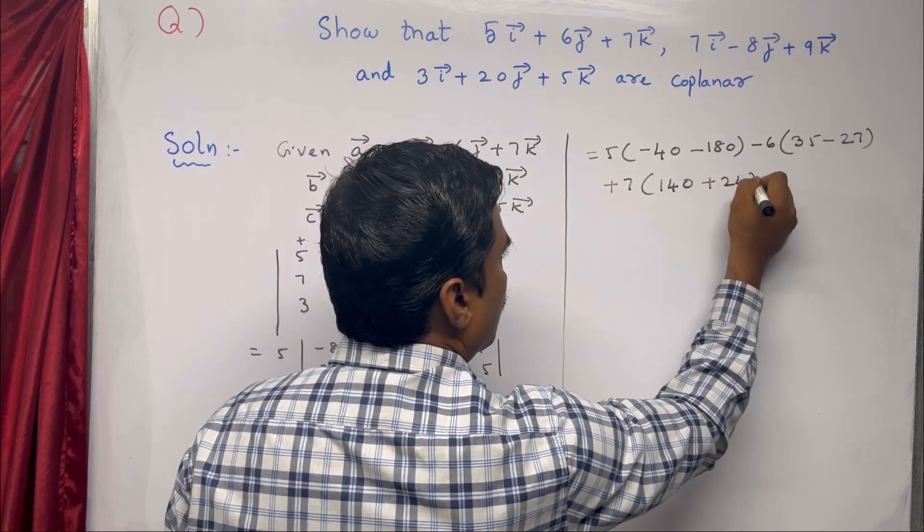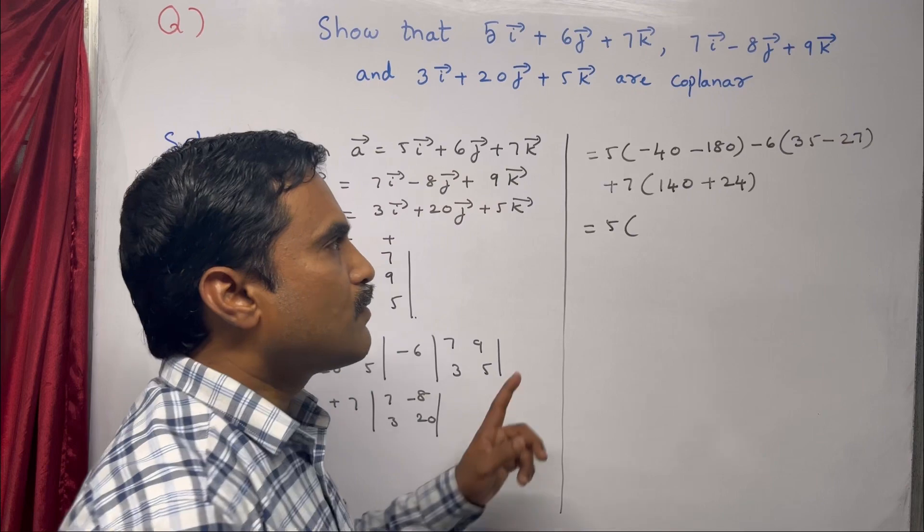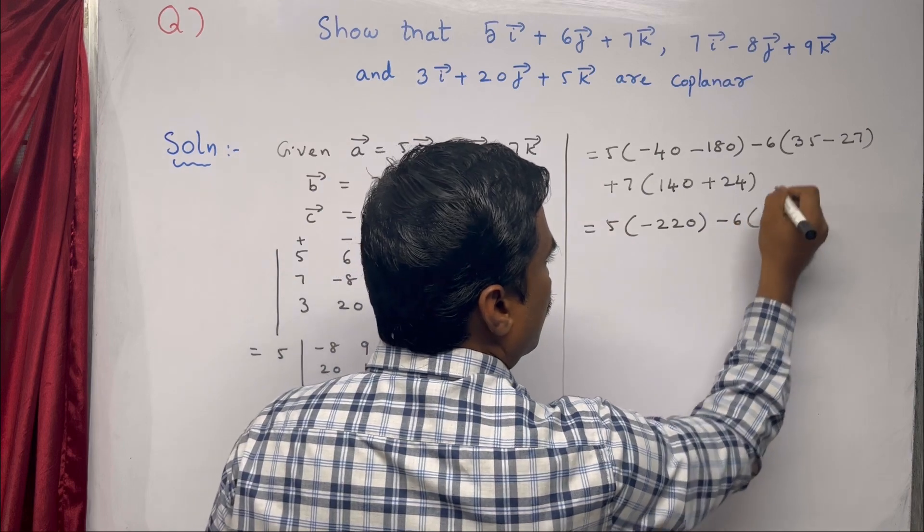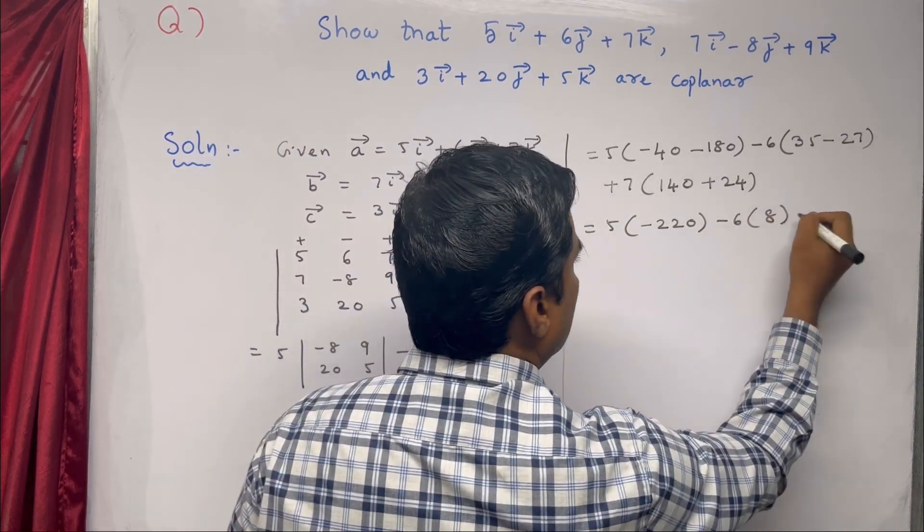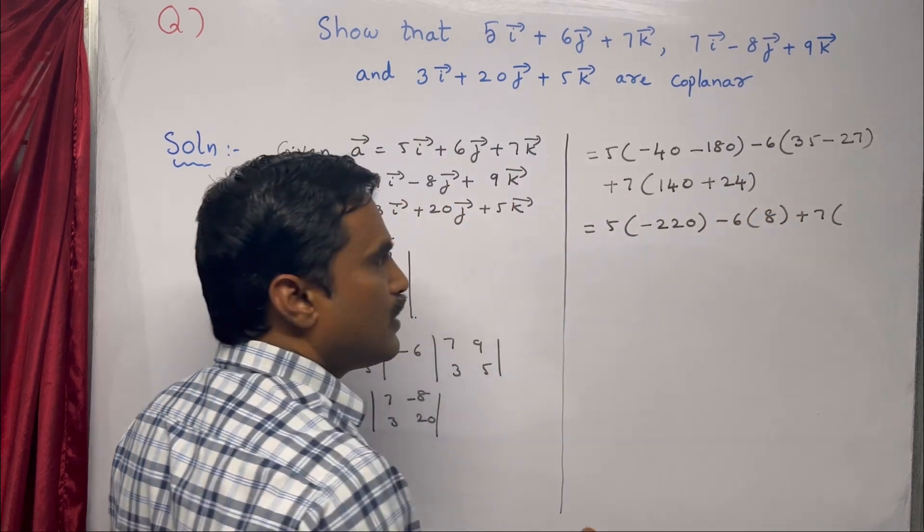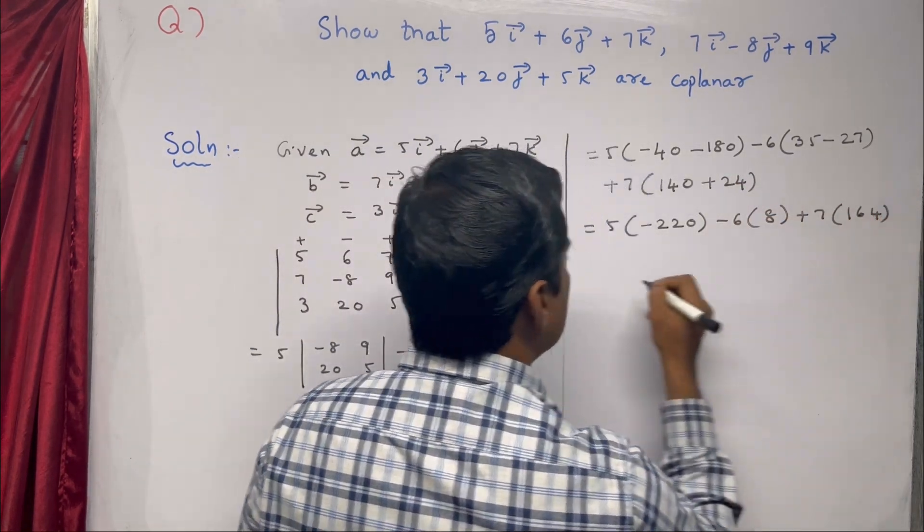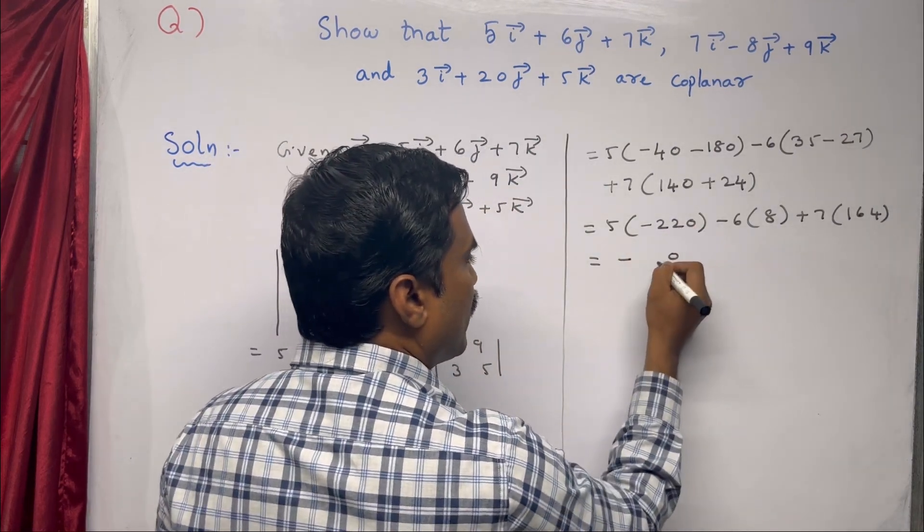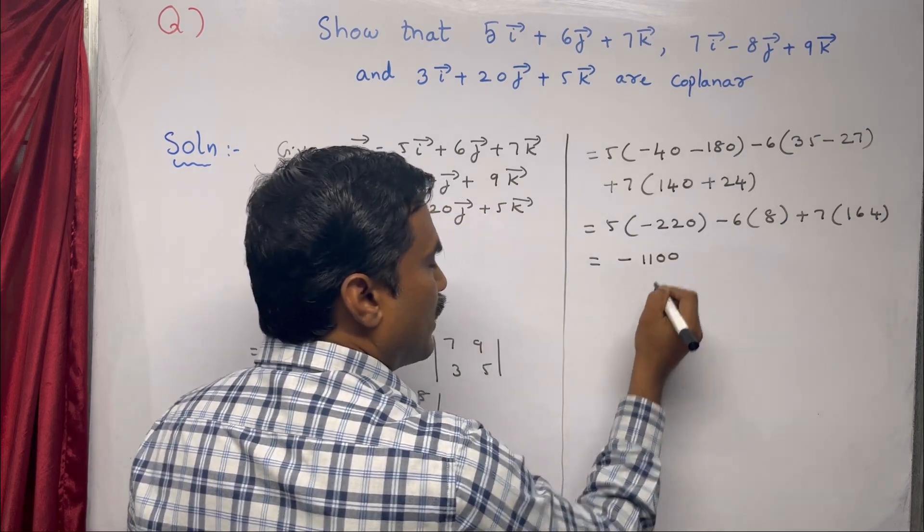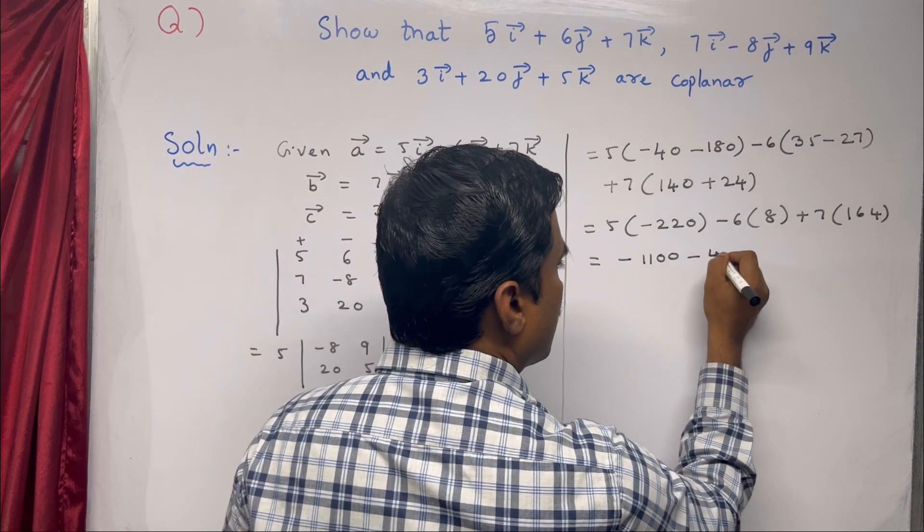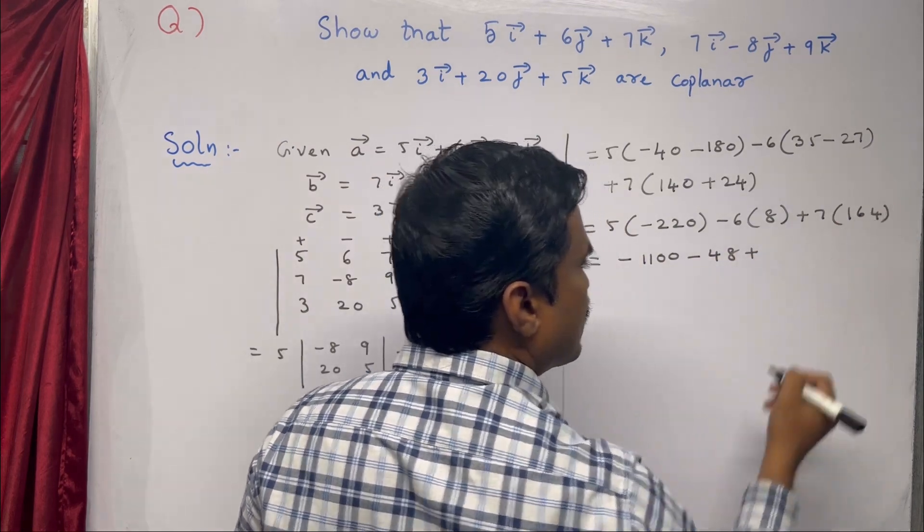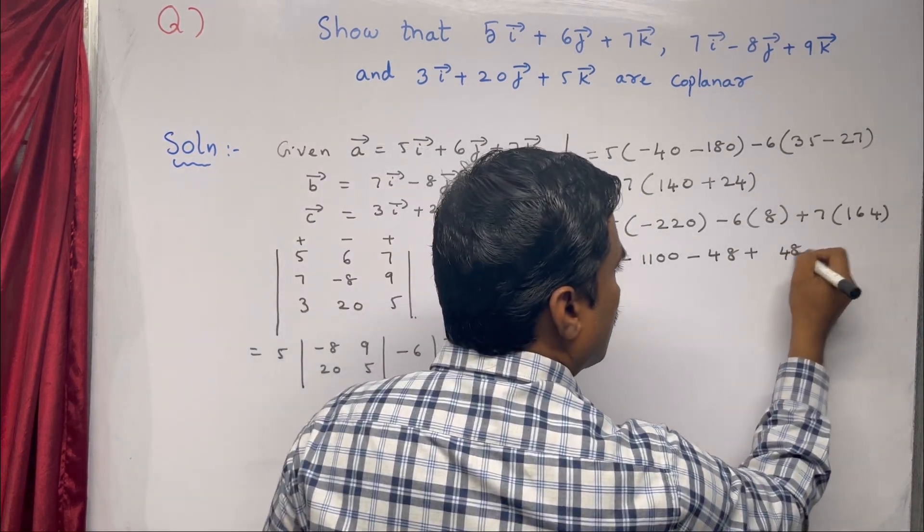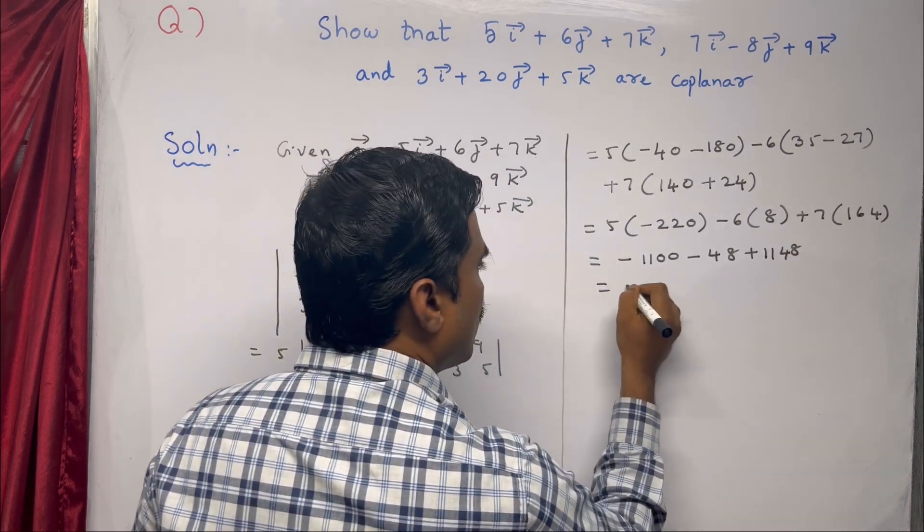This equals 5 times (-220) which is -1100, minus 6 times 8 which is -48, plus 7 times 164 which is 1148. So we get -1148 + 1148, and the value is 0.